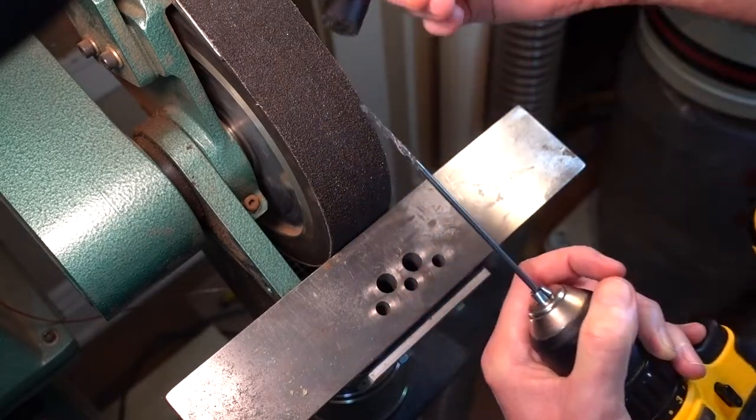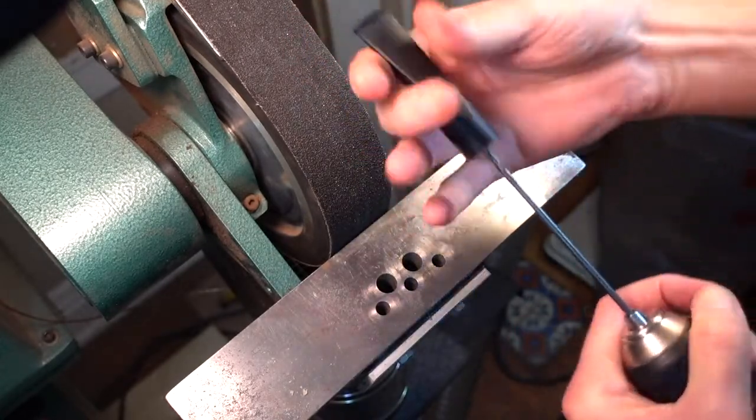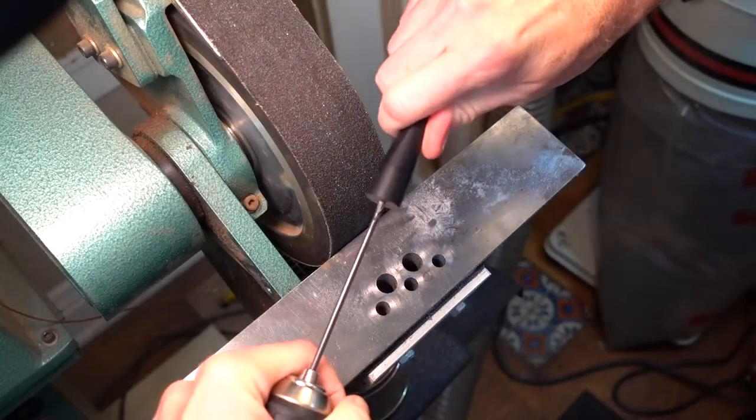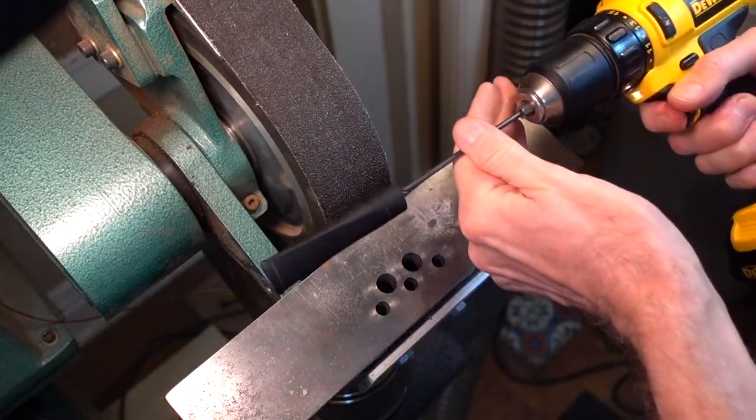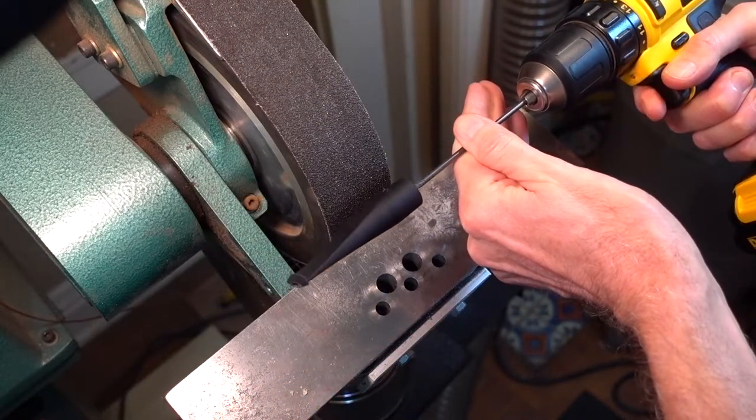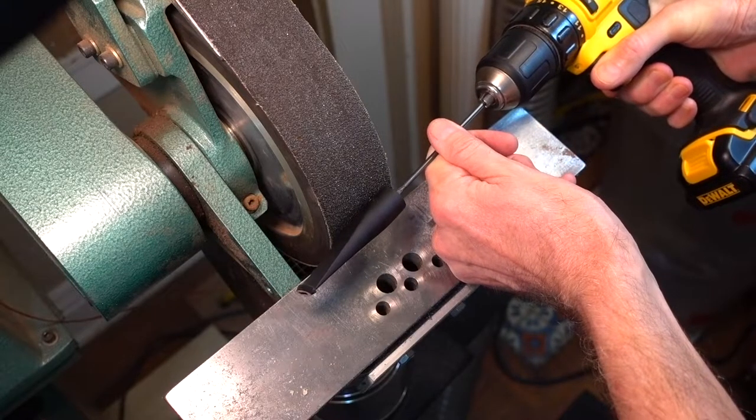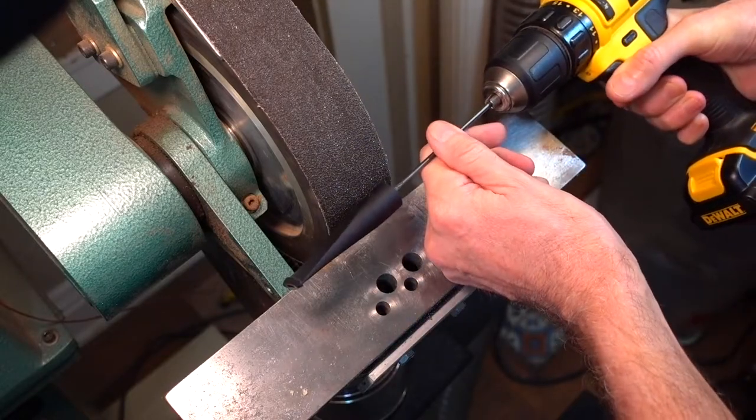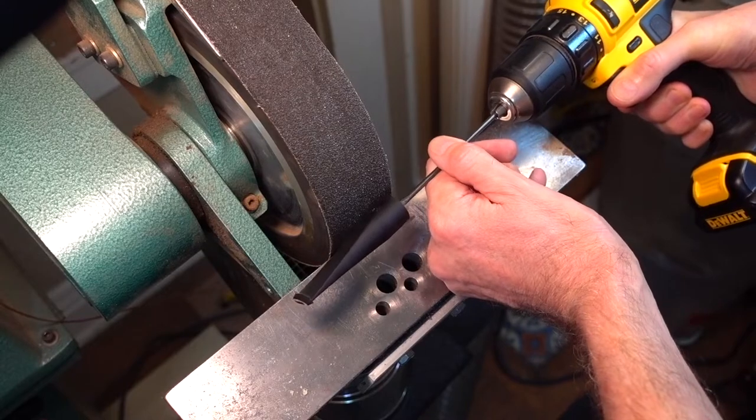So that when this gets threaded on, you push it on and then start to turn it, and when it bottoms out where the step down occurs in the hole, it's locked in place. So we are going to buzz this up against the 40-grit sanding belt by eye.